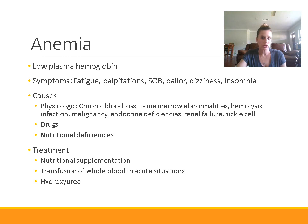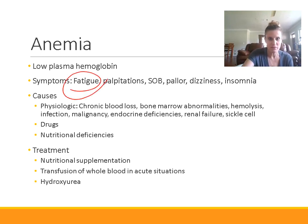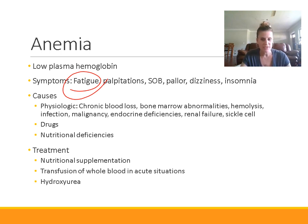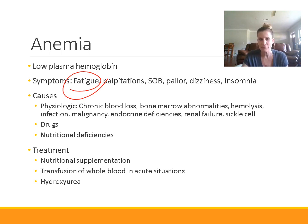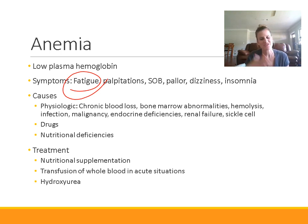Symptoms of anemia include fatigue — this is probably the most common symptom that we see with patients. They come in saying that they're just tired. Palpitations, shortness of breath, pallor or paleness. The blood is what gives color, especially in light-skinned people, so we can see paleness. Dizziness is another common one, and insomnia. There are a lot of different causes of anemia, and it's important to know the causes because we treat different types of anemia different ways.